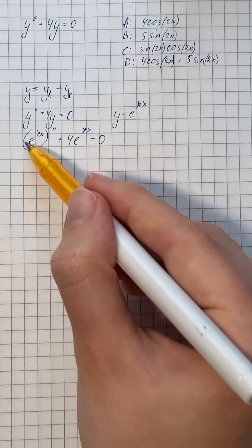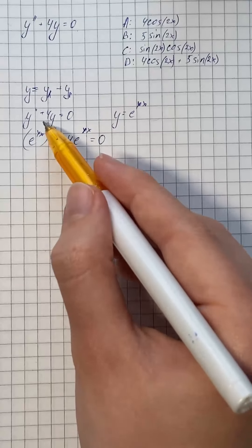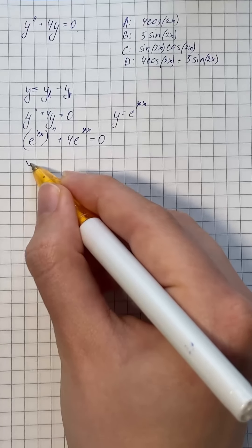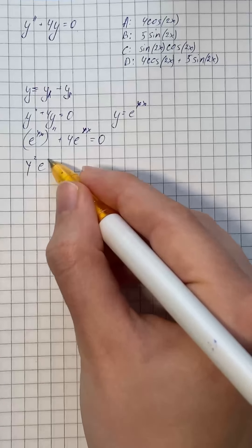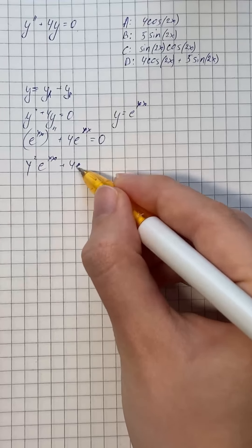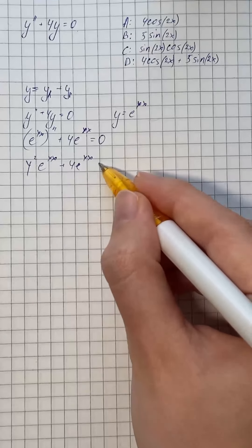So we're going to find second derivative of e to the power of gamma x. And we get that's going to be gamma squared e to the power of gamma x plus 4e to the power of gamma x equals 0.